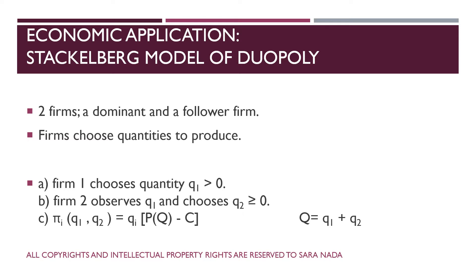What is the timing of the game? Firm 1 chooses quantity Q1 greater than 0, a positive quantity. Then at the second stage, firm 2, which moves second, observes the quantity produced by firm 1 and chooses its own quantity, which must be greater than or equal to 0. The payoffs for this game are the profits of each firm.